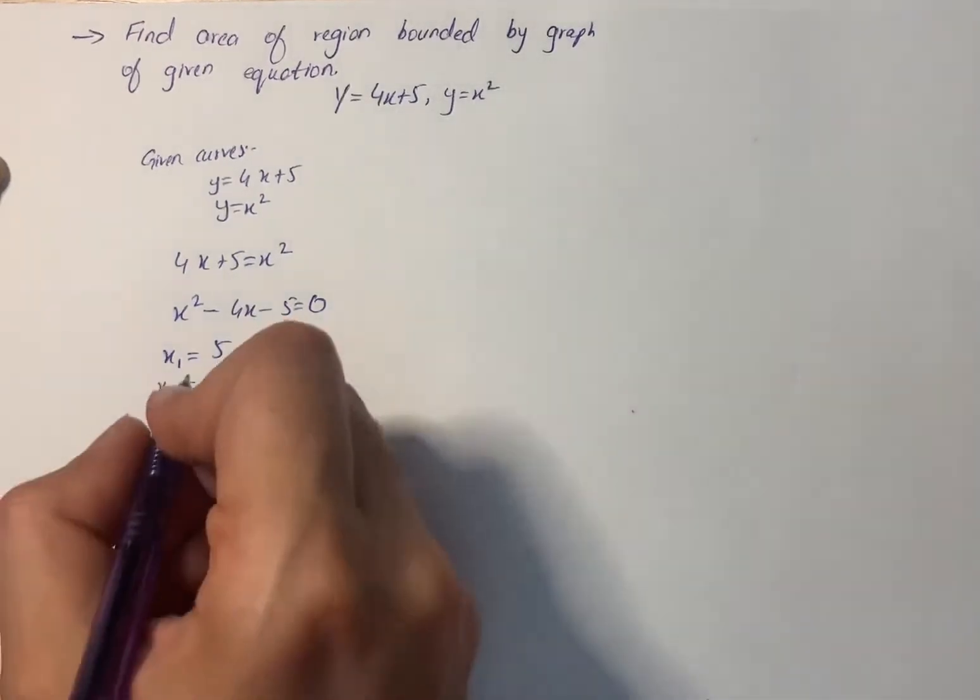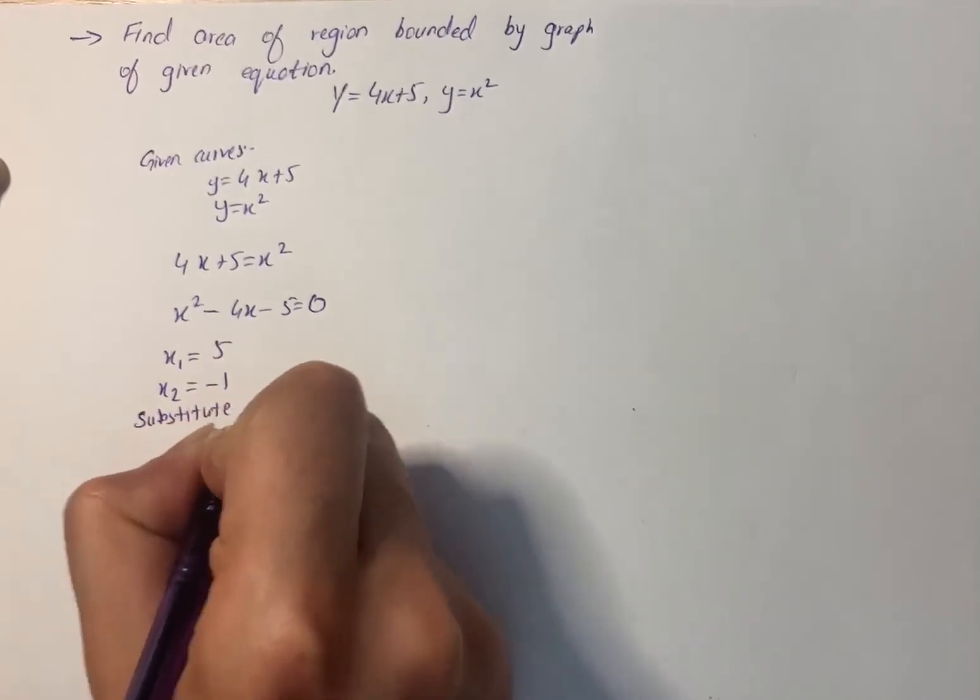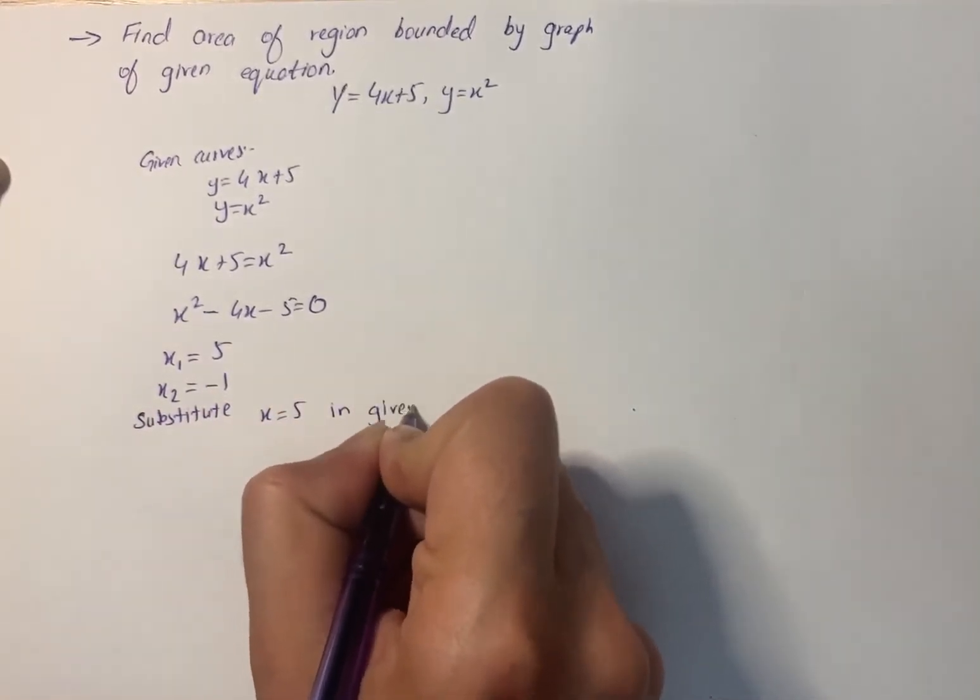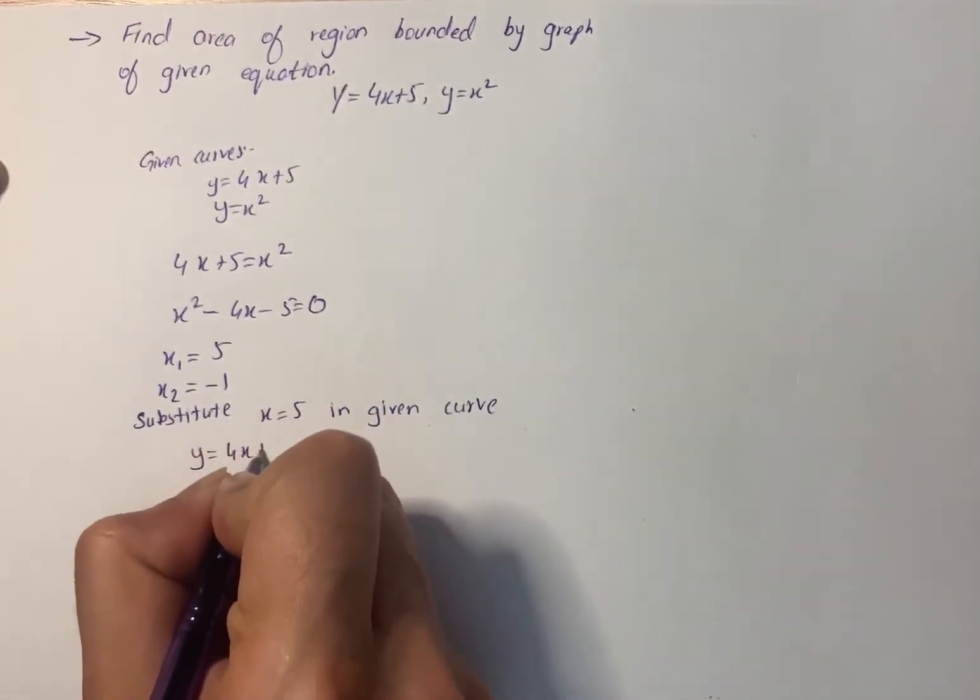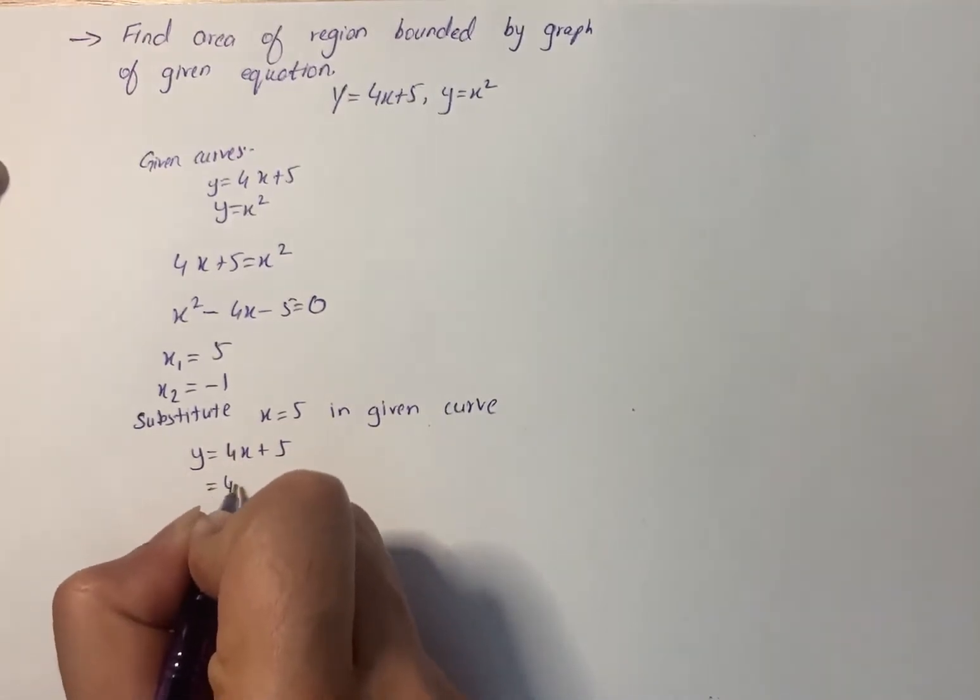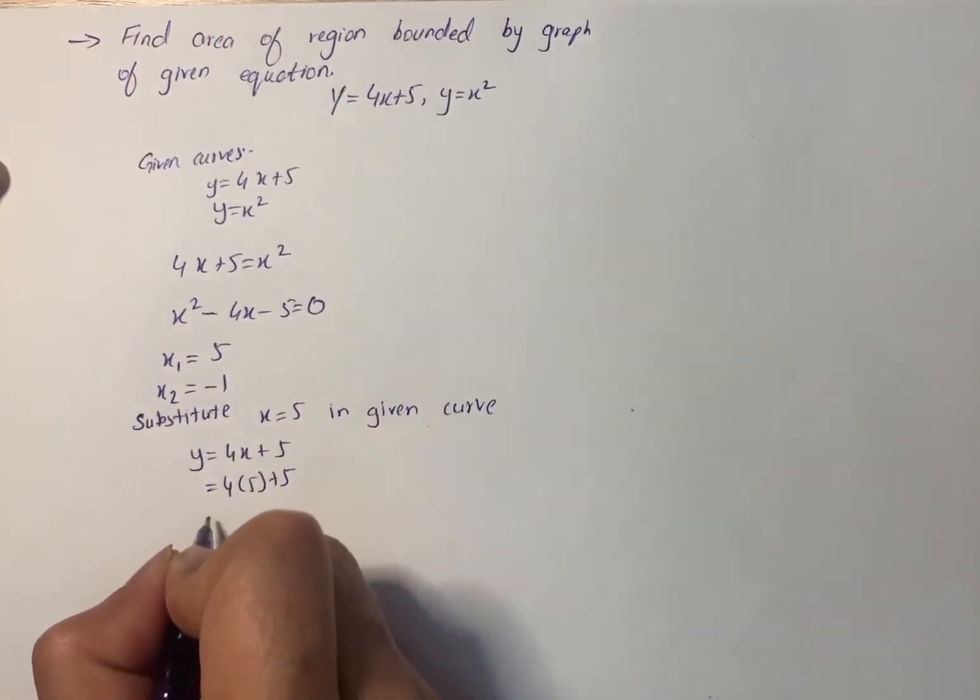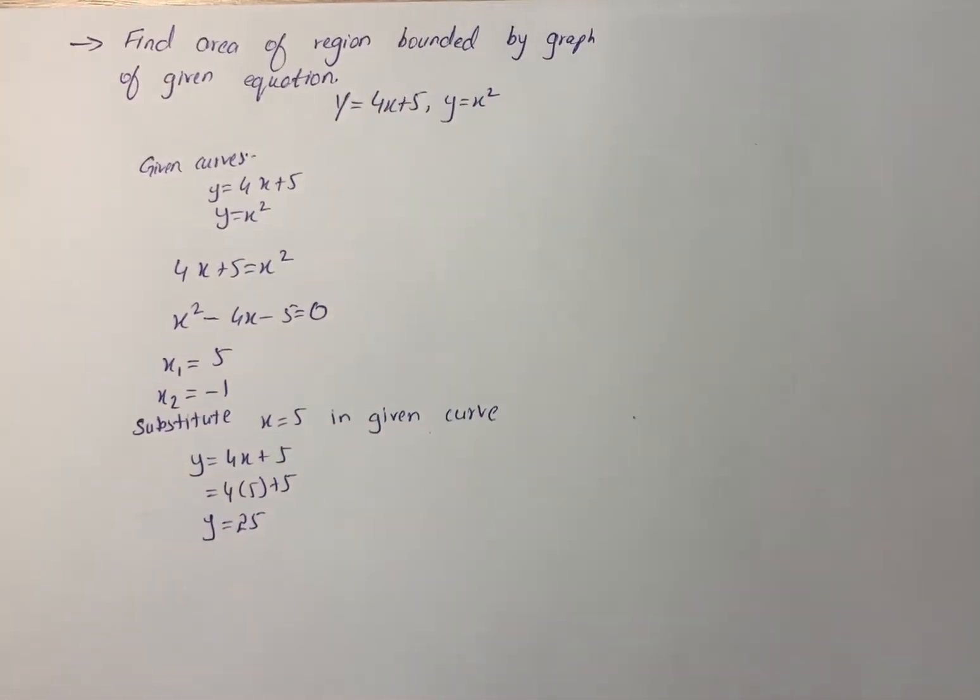Substitute x equals 5 in given curve, so we have y equals 4x plus 5, so 4 into 5 plus 5, we have y equals 25.